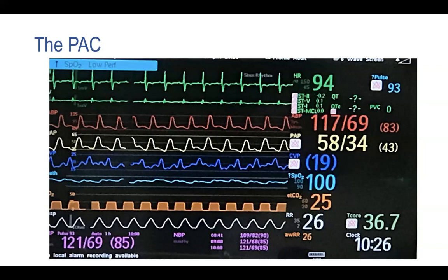I'm showing you a basic screen — this is one of our patients on our Philips monitor. You can see two leads of EKG, arterial pressure, PA pressure, central venous pressure which looks a little unusual — we'll talk more about that next week — plus pulse ox, end tidal CO2, respiratory rate, and other basic information. But our focus today is really looking at the pulmonary artery catheter.